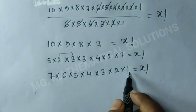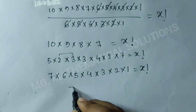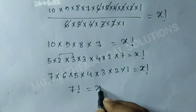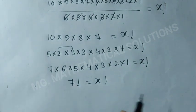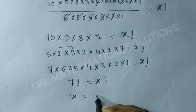This is 7 factorial. So 7 factorial equals x factorial. Now we can say that x equals 7. So this is the final answer.